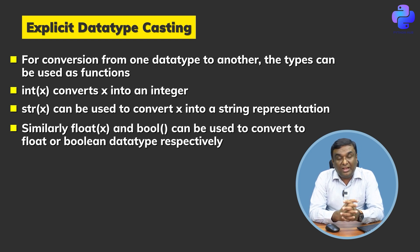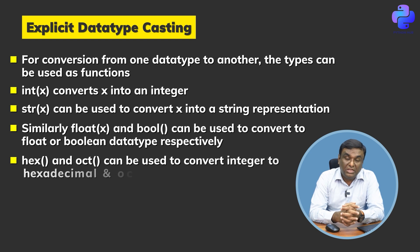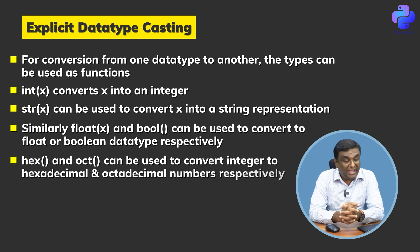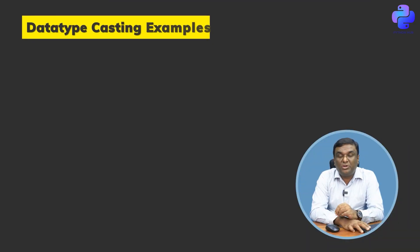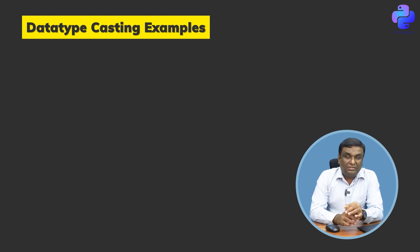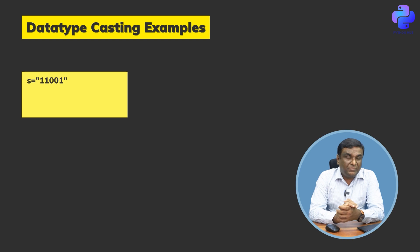We have certain other variables also. Like we discussed, there are boolean data types and binary data types. We have hex() and oct() - these are functions you can use to convert integer to hexadecimal or octal numbers respectively. Now let's look at some examples before we move on. Take this simple assignment: s equals "11001".